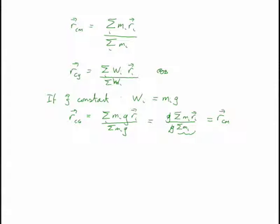Another example: a rod near a black hole. The center of gravity of the rod would not be the center of mass, because the part near the black hole would feel a far larger gravitational field, and the part further away would feel less. The center of gravity would actually be closer to the black hole than the center of the rod. For most cases you'll deal with, you'll have a constant gravitational field and the center of mass equals the center of gravity — but it's not guaranteed.